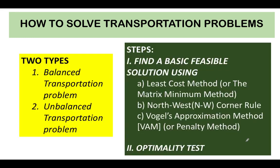In solving transportation problems, we follow these steps. The first step is to find a basic feasible solution using any of three methods: the least cost method, the northwest corner rule method, or Vogel's approximation method, also known as the penalty method. The goal of step one is to allocate goods to each customer. Then in step two, we perform the optimality test to assess if our feasible solution gives us the least cost.